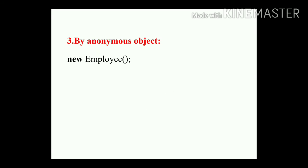The third way is by using an anonymous object. This is declared as: new Employee() — using the new keyword with the class name Employee. This is also one of the methods to make an object eligible for garbage collection.